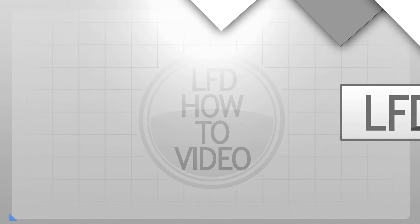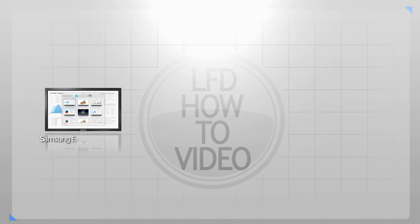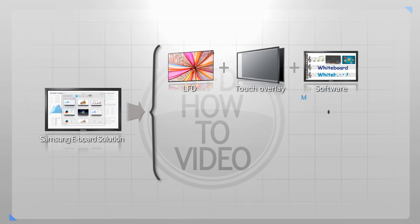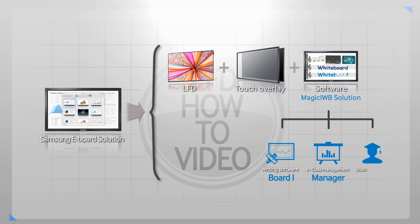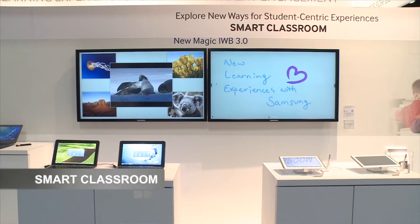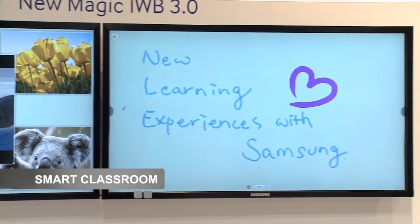Samsung offers total eBoard solution as you wish. eBoard components are LFD, our professional display, in our case an ME 75C model, plus a touch overlay with the same size as the LFD which goes on top of the LFD and turns it into a touch display through USB cable, plus the last but not least component would be our powerful proprietary software IWB 3.0. Integration of all three creates a complete eBoard solution for the education and corporate environment.